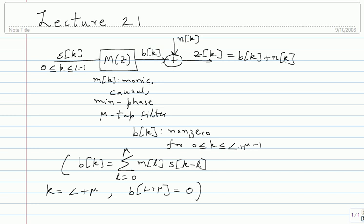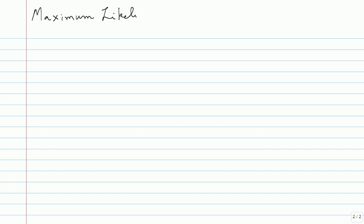We took some simple examples where we chose the constellation and a simple M(Z) to get values for B_K. B_K is not an IID constellation — it has memory. The real problem is detection: given Z_K for K between 0 and L plus mu minus 1, can we find the maximum likelihood estimate for the sequence S_K for K between 0 and L minus 1? We cannot do it independently for each K because of the ISI and memory — we have to detect the entire sequence.